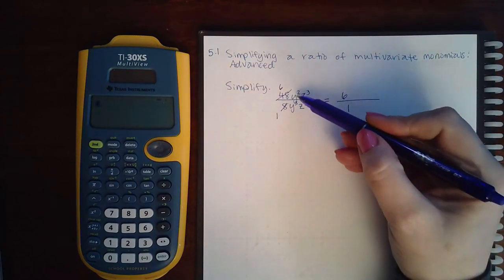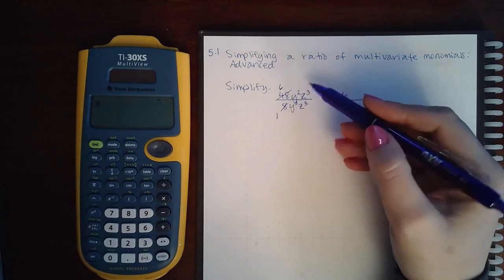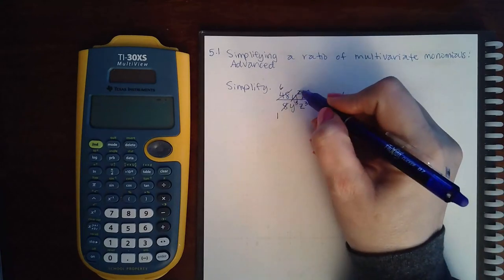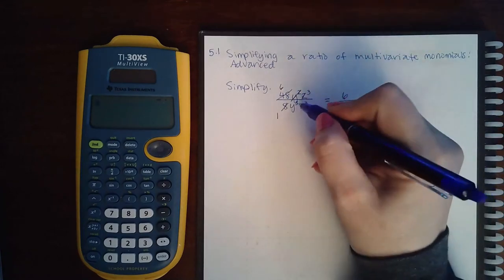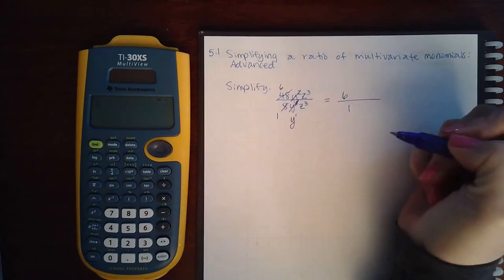Here I have y squared and y to the third. I can cancel out 2 because this only has 2 to give. So if I cancel out 2, all the y's on the top are gone. If I cancel out 2 here, I'm still going to have 1 y left downstairs.